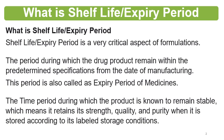It is important to understand what the expiry period is. It is the period during which the formulation or drug product remains within the predetermined specifications from the date of manufacturing — that is, from the date of manufacturing until the product retains its predetermined specifications. These specifications are related to the safety and efficacy of the formulation. This period is also called the expiry period of the medicines. Whenever we take medicines from stores or from a physician, we check the expiry date, which is also called the shelf life period. During that period, it is safe to take the medicine.